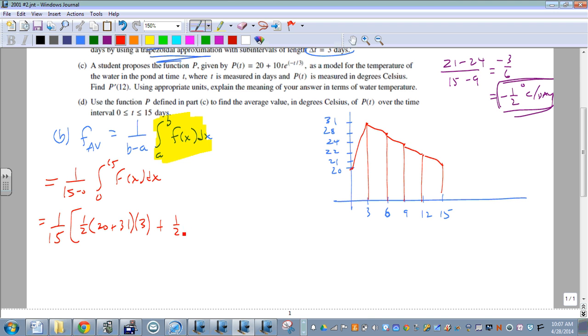So that's our first trapezoid. Then the next one, we have 1 half times 31, plus 28, times 3, plus 1 half times 28, plus 24, times 3. That's our third trapezoid, plus 1 half times 24, plus 22, times 3, plus 1 half times 22, plus 21, times 3.